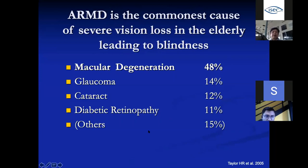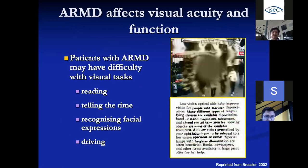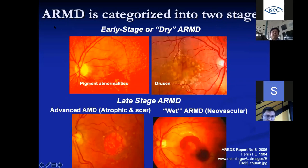AMD is very common in people aged 50 and above and is one of the most common causes of vision loss in the developed world — unlike cataract, which is reversible. Symptoms include difficulty reading, identifying faces, driving, and telling the time. AMD is categorized into two stages: early dry AMD, which has only pigment abnormality or drusen deposits at the RPE level with no abnormal blood vessels or leakage; and wet AMD, where abnormal blood vessels grow under the retina and bleed, causing scarring and permanent damage.